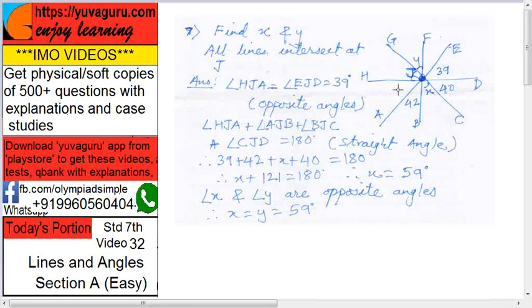So HJA, this angle, plus AJB, this angle, plus BJC, this angle, plus CJD, this angle. These four angles total will be 180 degrees, because HD is a straight line.